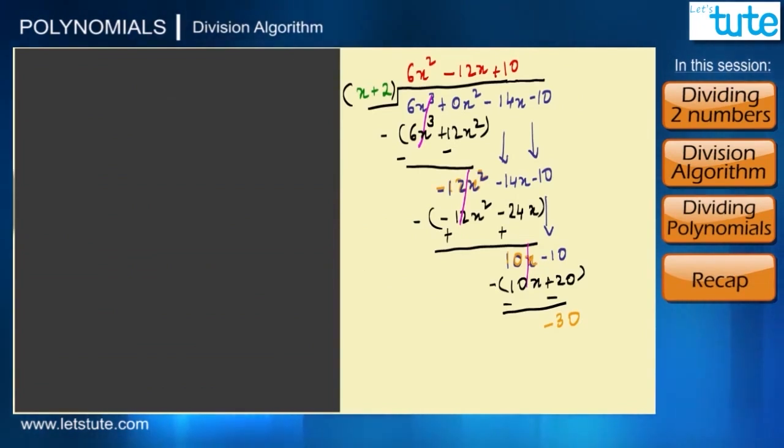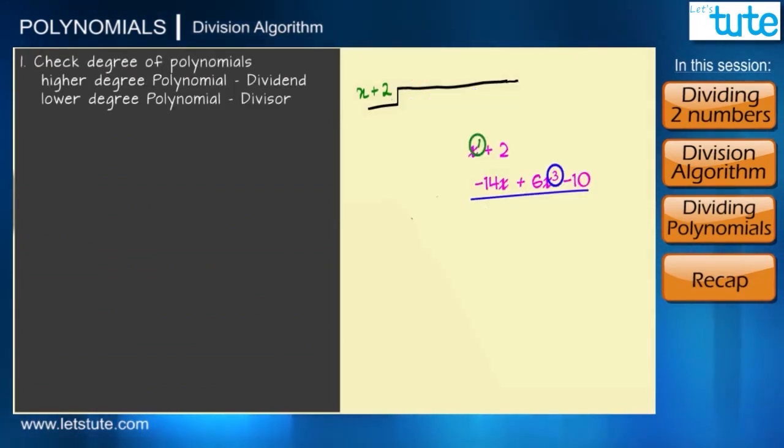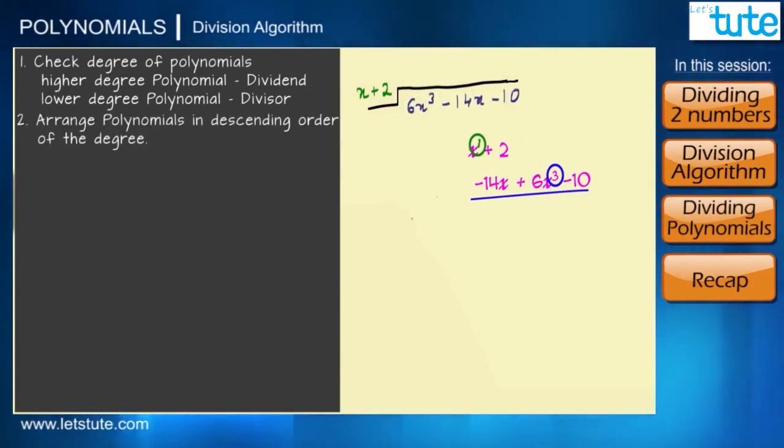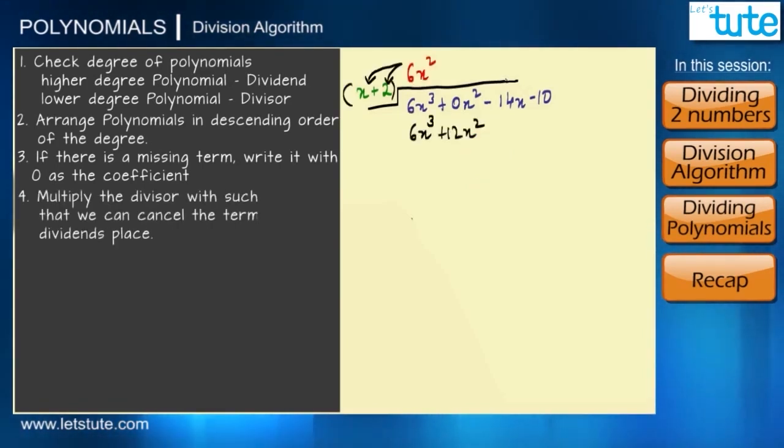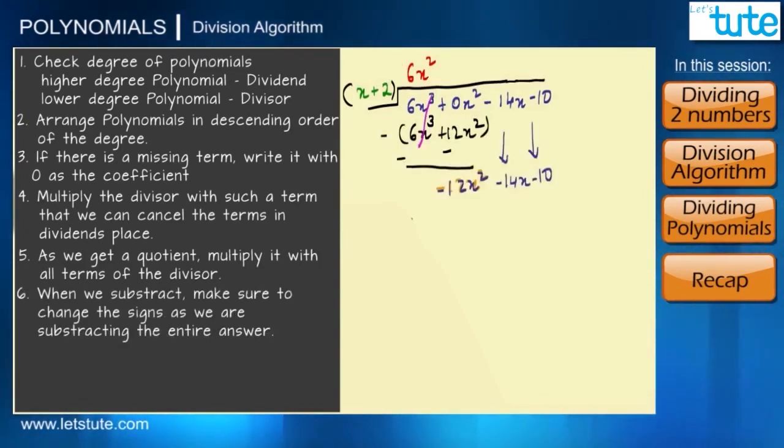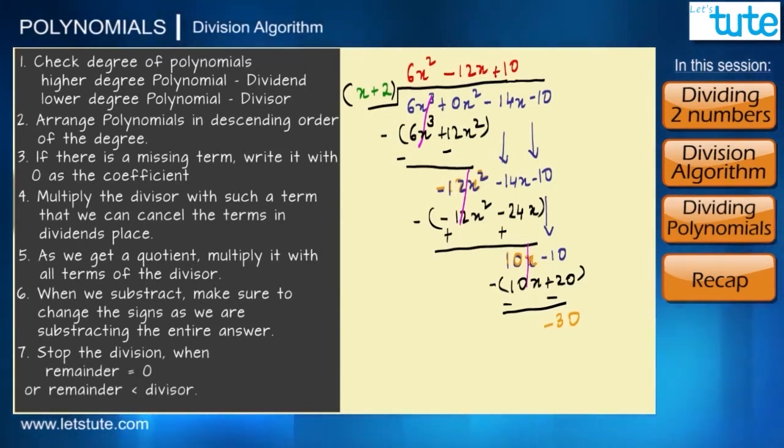So what are the steps used in dividing polynomials? Firstly we have to check that the polynomial with higher degree is our dividend and the polynomial with lower degree is our divisor. Then we check whether it is arranged in the descending order of the degree. Third, if any of the degree is missing we write it down with 0 as the coefficient, which means if an x² is missing we will write it as 0x². Fourth, multiply the divisor with a term such that we can cancel the terms in the dividend. Fifth, as we get a quotient we multiply it with all the terms of the divisor. And lastly when we subtract we subtract all the terms which means the signs change. And we stop our division when the remainder is either 0 or it is lesser than the divisor.